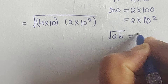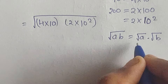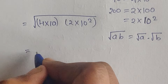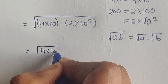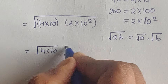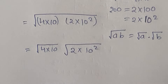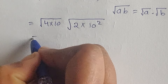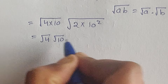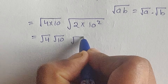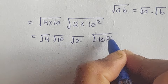Here we can use the formula: the square root of a times b equals the square root of a times the square root of b. Using this formula, we can write: square root of 4, times square root of 10, times square root of 2, times square root of 10 squared.